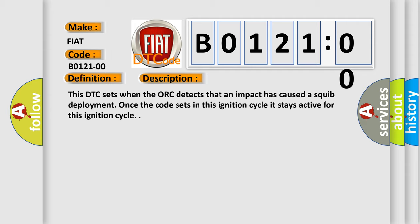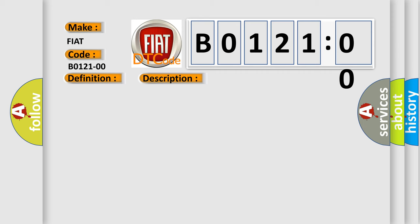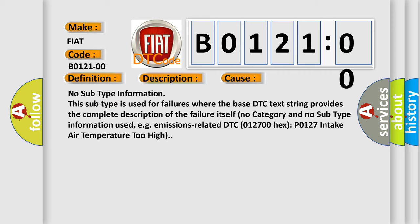This diagnostic error occurs most often in these cases: no subtype information. This subtype is used for failures where the base DTC text string provides the complete description of the failure itself. No category and no subtype information used, for example, emissions-related DTC 012700 hex P0127 intake air temperature too high.